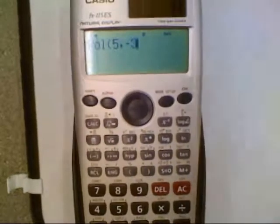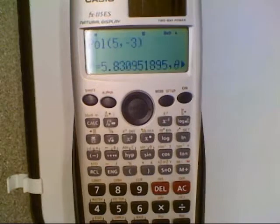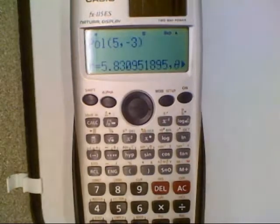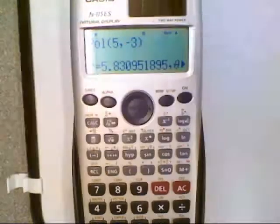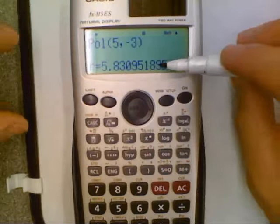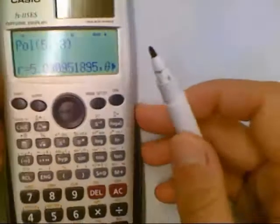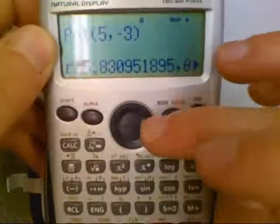Then close our parenthesis and hit enter. The calculator gives us both parts immediately. It gives us the magnitude of the vector or the radius of our polar coordinates, which we'll round to 5.83.